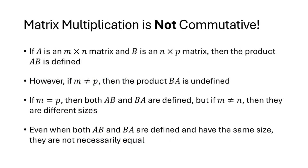It's important to notice that what's missing from the list of properties is commutativity. In general, it's not true that A times B equals B times A. If we have an m by n matrix and an n by p matrix, we can multiply A times B, but if M and P are not the same number, then we can't multiply B times A — the matrices can't be multiplied in the other order unless those two numbers are equal.